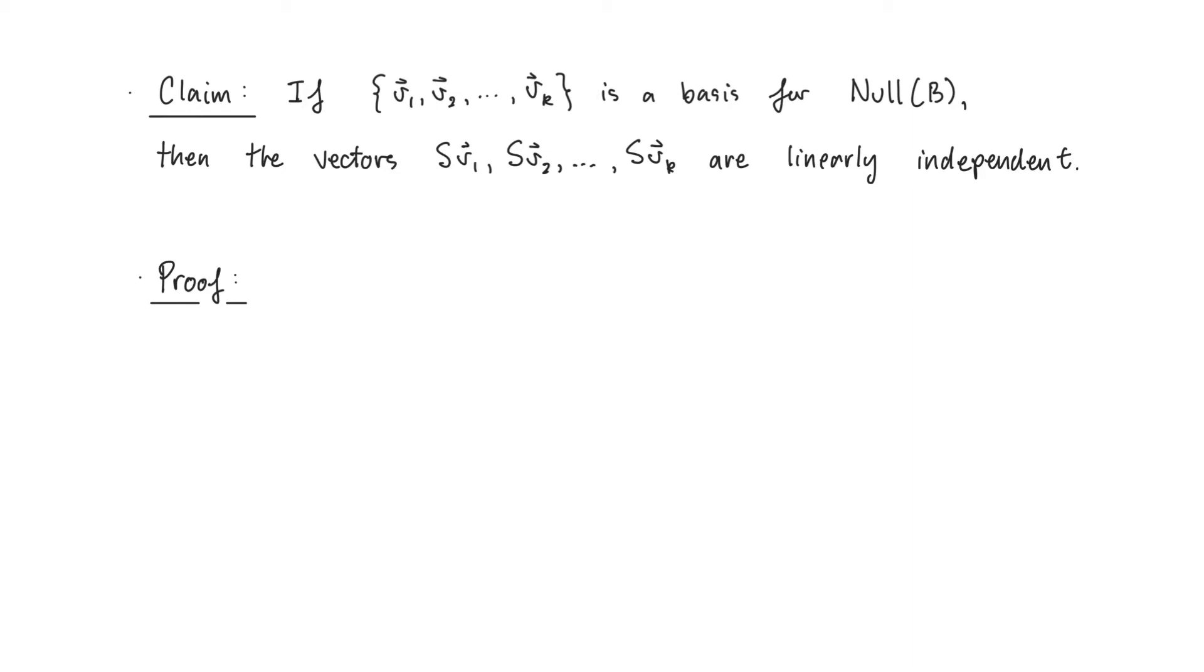If V1, V2, all the way up to Vk are a basis for the null space of B, then I claim that S times V1, S times V2, all the way up to S times Vk are linearly independent. Remember, we just showed that these are all in the null space of A. In fact, this is exercise 5.1.10 in the textbook. If you're following along, pause the video and see if you can prove this for yourself.